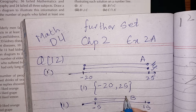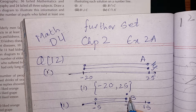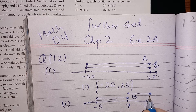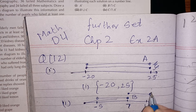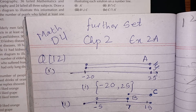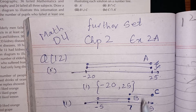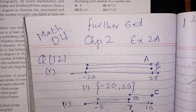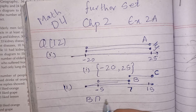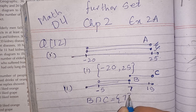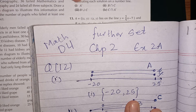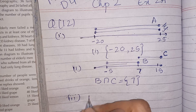For set C, 7 is filled and we go till 15 which is not included, so 15 is unfilled. The answer for B intersection C: there is only one common point, which is 7. So B intersection C = {7}.